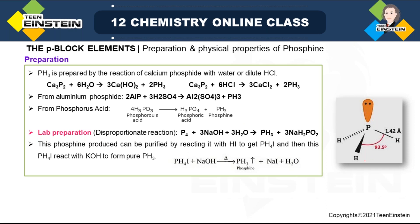Phosphine (PH3): it has pyramidal geometry with three P–H bonds and one lone pair — analogous to ammonia. The bond angle is 93.5°, less than the tetrahedral angle of 109°, due to lone pair–bond pair repulsion. PH3 is prepared from calcium phosphide (Ca3P2): Ca3P2 has Ca²⁺ (3×+2 = +6 total) balanced by P³⁻ (2×−3 = −6). When Ca3P2 reacts with water, PH3 and Ca(OH)2 are produced. With HCl instead of water, PH3 and CaCl2 are produced.